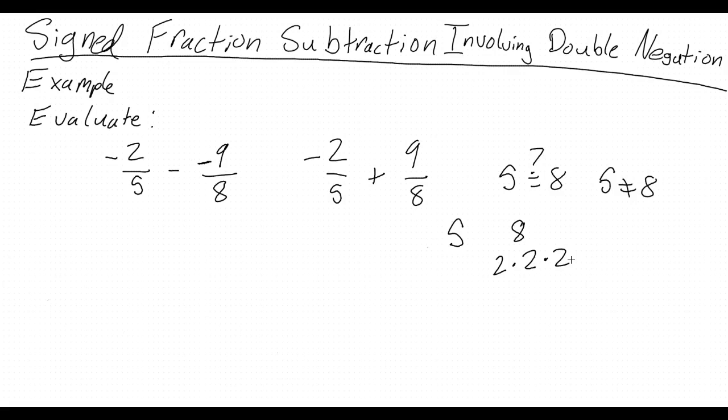This means the easiest way to get the same denominator in both fractions is to multiply 5 by 8 and 8 by 5, which leaves us negative 2, 5 times 8, plus 9 over 8 times 5.